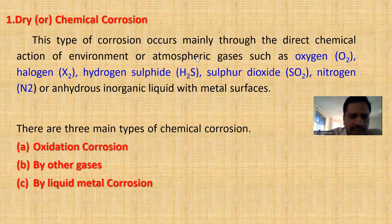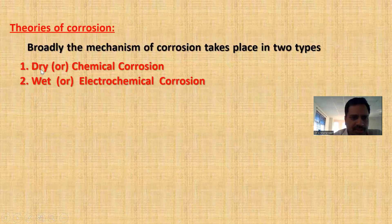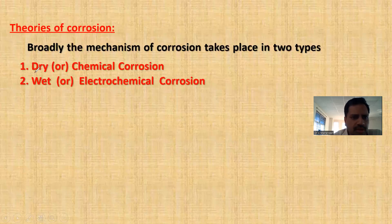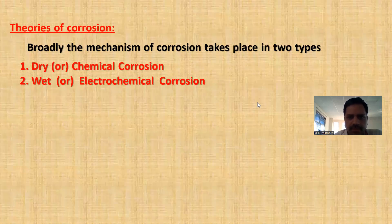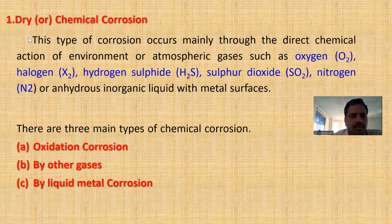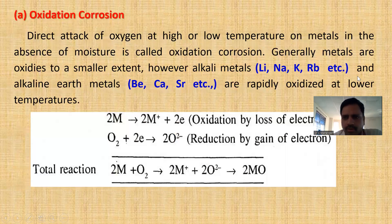Dry corrosion will take place by three ways: oxidation corrosion, corrosion by other gases, and liquid metal corrosion. First we'll see oxidation corrosion.